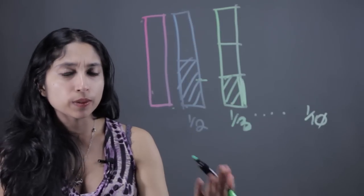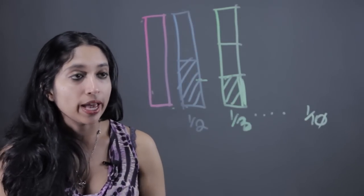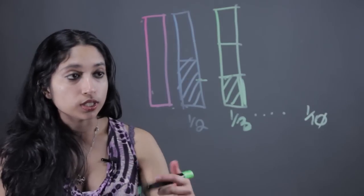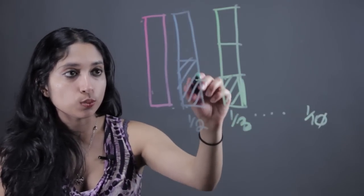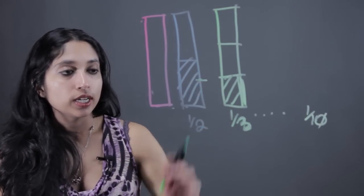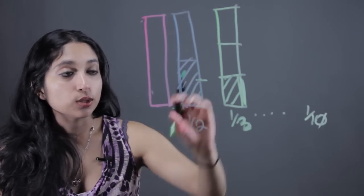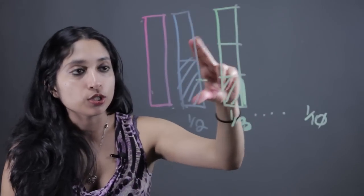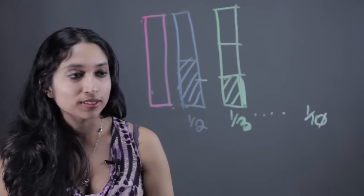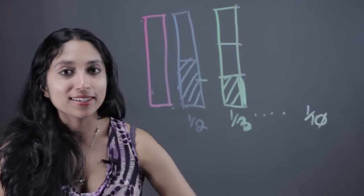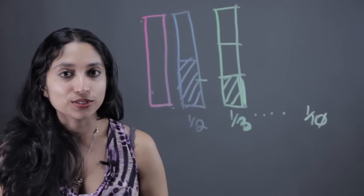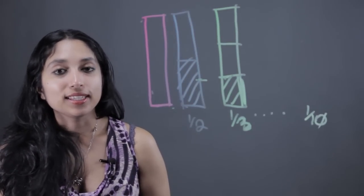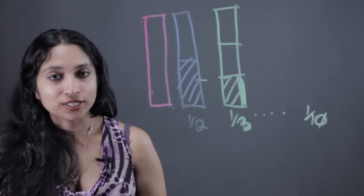So this helps them understand and recognize patterns. A good thing to do with this is also develop relationships — for instance, one half is actually equal to two of the one-fourth pieces, which you can demonstrate by lining the two up together. And that's how to introduce fractions using fraction strips. My name is Subba Gerwal, and thank you for taking an interest in math.